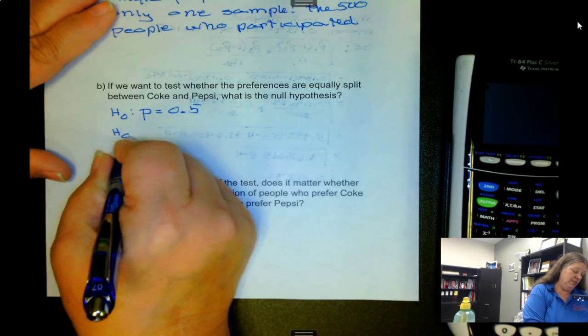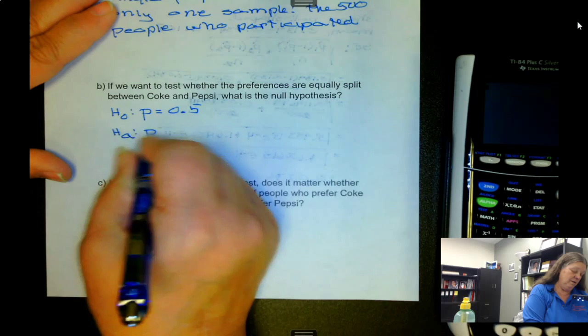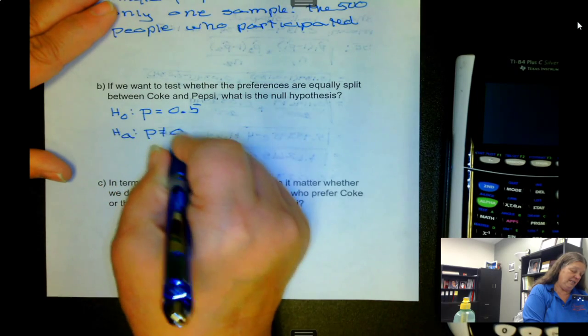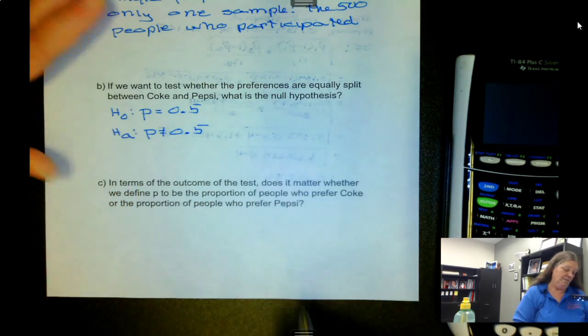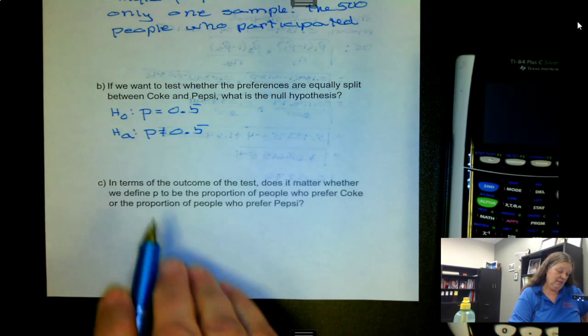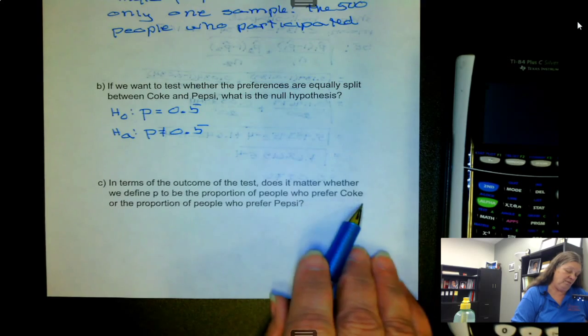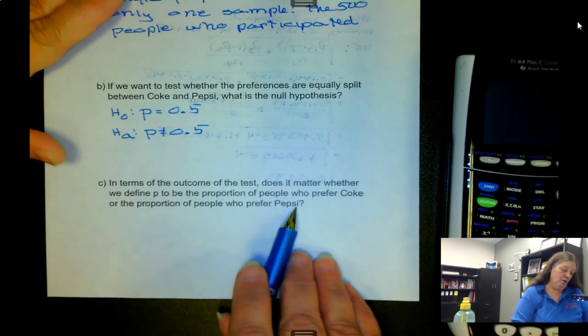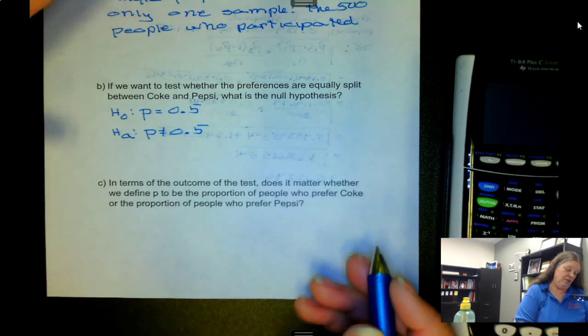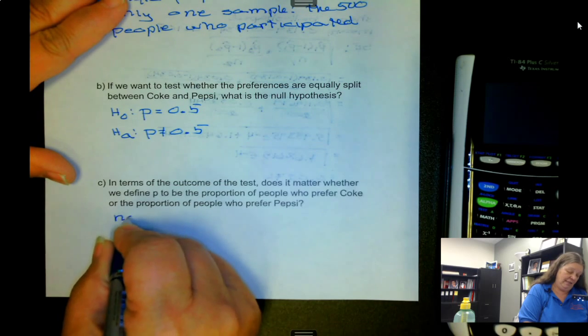The alternative would be that it doesn't equal 0.5. So in terms of the outcome, does it matter whether we define p to be the proportion of people who prefer Coke or the proportion who prefer Pepsi? That's no.